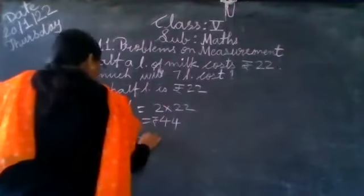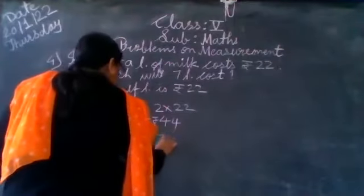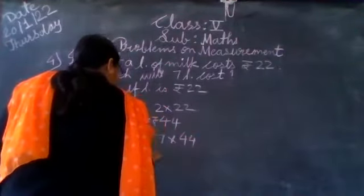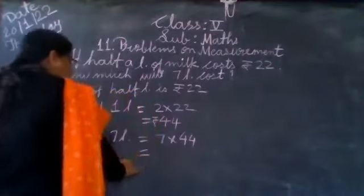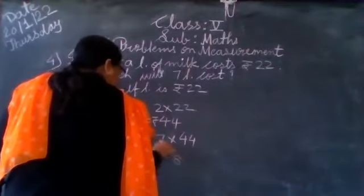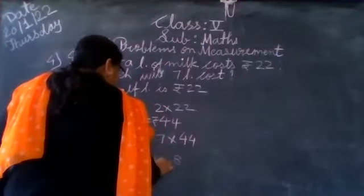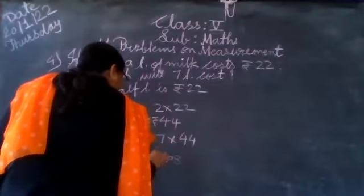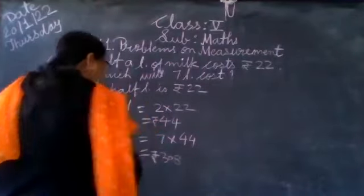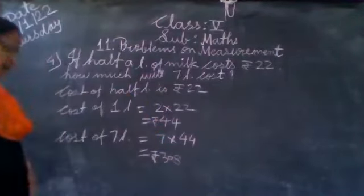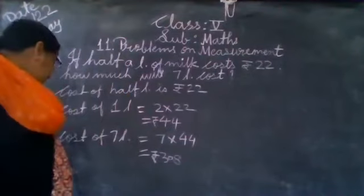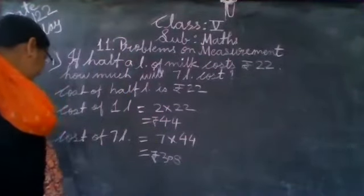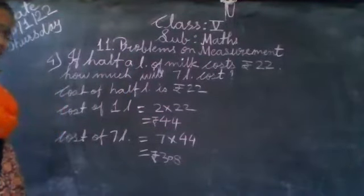Now we will find the cost of 7 litres. The cost of 1 litre is rupees 44. We will multiply it by 7, so we will get the cost of 7 litres. 44 multiplied by 7 is 308. So the cost of 7 litres is rupees 308.